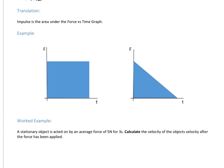Looking at the first example, the shape is a square, so the impulse is simply F times t. The second example is a triangle, and the area of a triangle is half base times height. So if we call that f and that t, the impulse in this case is half f times t. Depending on what shape your graph is, you might get more complicated things and have to approximate, but impulse equals area under the force-time graph.